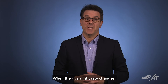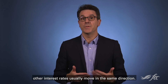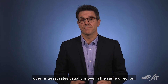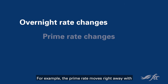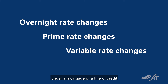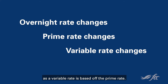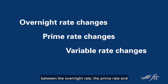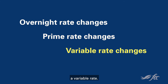When the overnight rate changes, other interest rates usually move in the same direction. For example, the prime rate moves right away with changes in the overnight rate. And variable rates paid under a mortgage or a line of credit would be impacted right away, as a variable rate is based off the prime rate. So there's a direct connection between the overnight rate, the prime rate, and a variable rate.